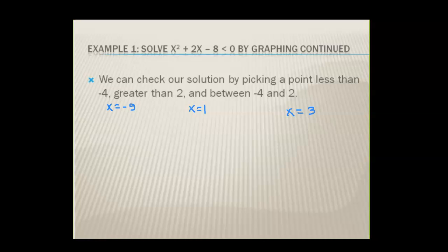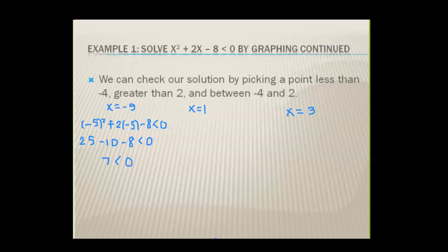That's negative five squared plus two times negative five minus eight, and we want to know if that is less than zero. Negative five squared is positive 25, two times negative five is negative 10, minus eight. So 25 minus 18 is seven — seven is not less than zero. Since the value at x equals negative five is positive, it doesn't meet the requirement that the quadratic function has to be negative. Therefore, negative five and values less than negative four do not work.